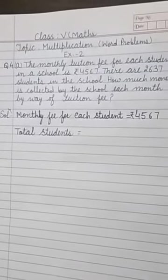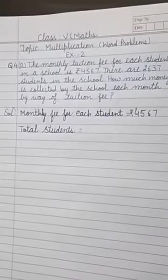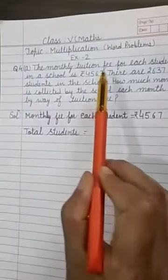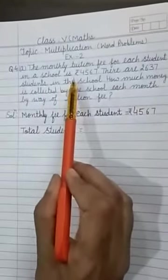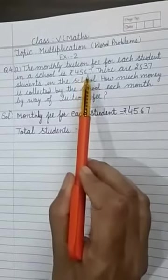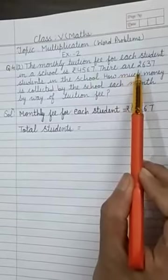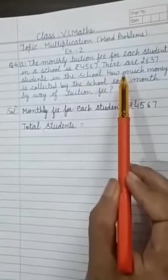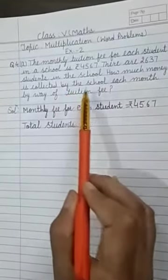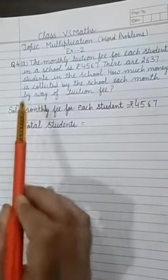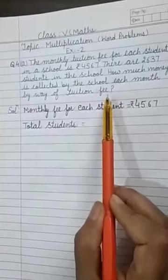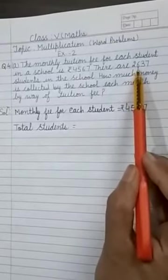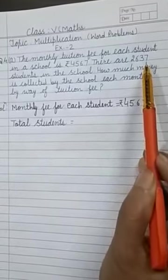So let us start exercise 2 with question number 4. Here in this question number 4, the statement is: the monthly tuition fee for each student in a school is Rs. 4567. There are 2637 students in the school. Then we have to find how much money is collected by the school each month by way of tuition fee. That we have to find out.